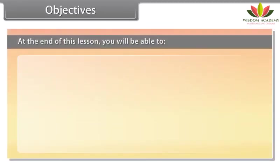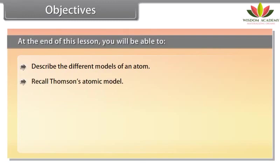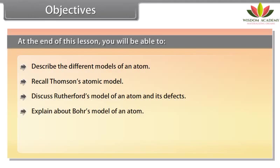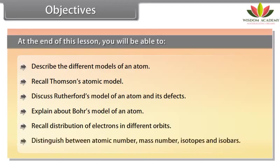Objectives. At the end of this lesson, you will be able to describe the different models of an atom, recall Thomson's atomic model, discuss Rutherford's model of an atom and its defects, explain about Bohr's model of an atom, recall distribution of electrons in different orbits, and distinguish between atomic number, mass number, isotopes and isobars.